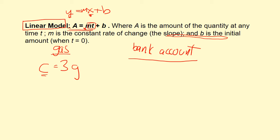For the bank account example it's a little different, because the initial amount was a hundred dollars — we started with a hundred before adding our weekly paycheck. Then we put in twenty-five dollars every week. So the linear model is A equals 25W plus 100. Also note: the b can sometimes be negative, and the m value can also be negative — these variables include positive or negative numbers.